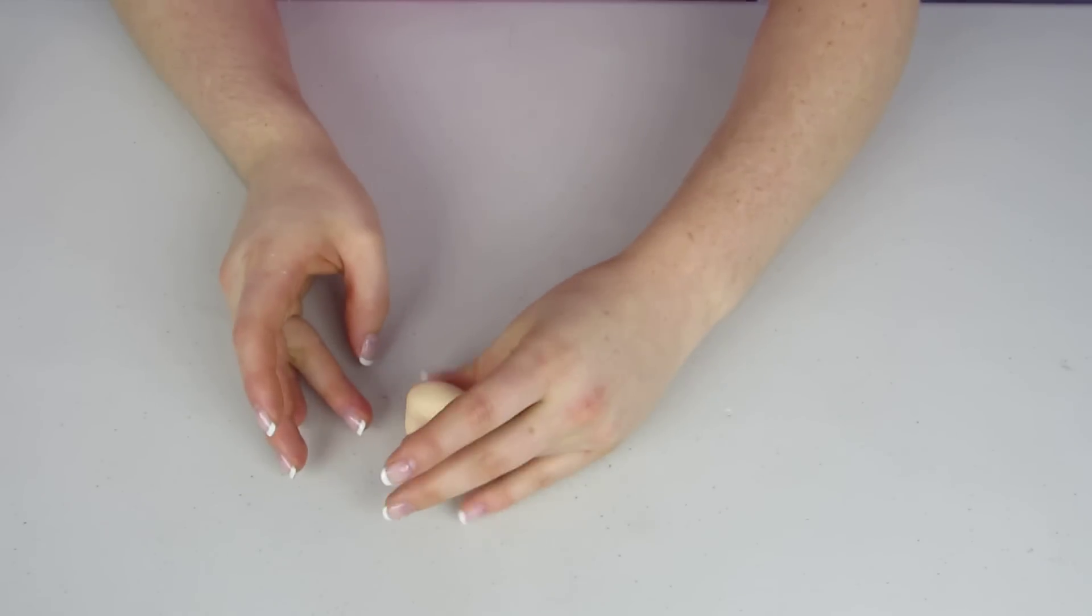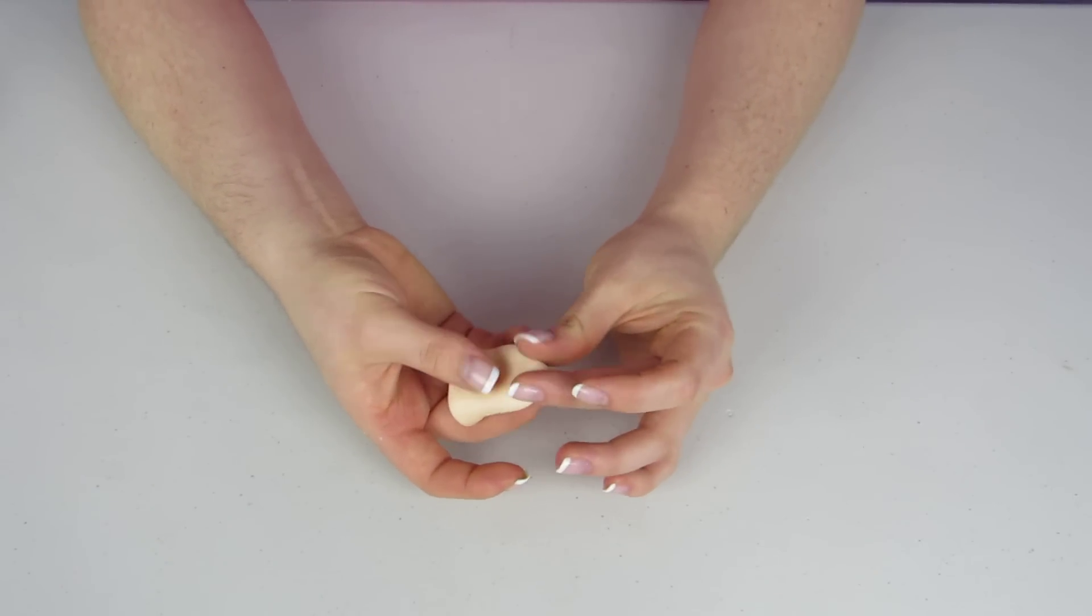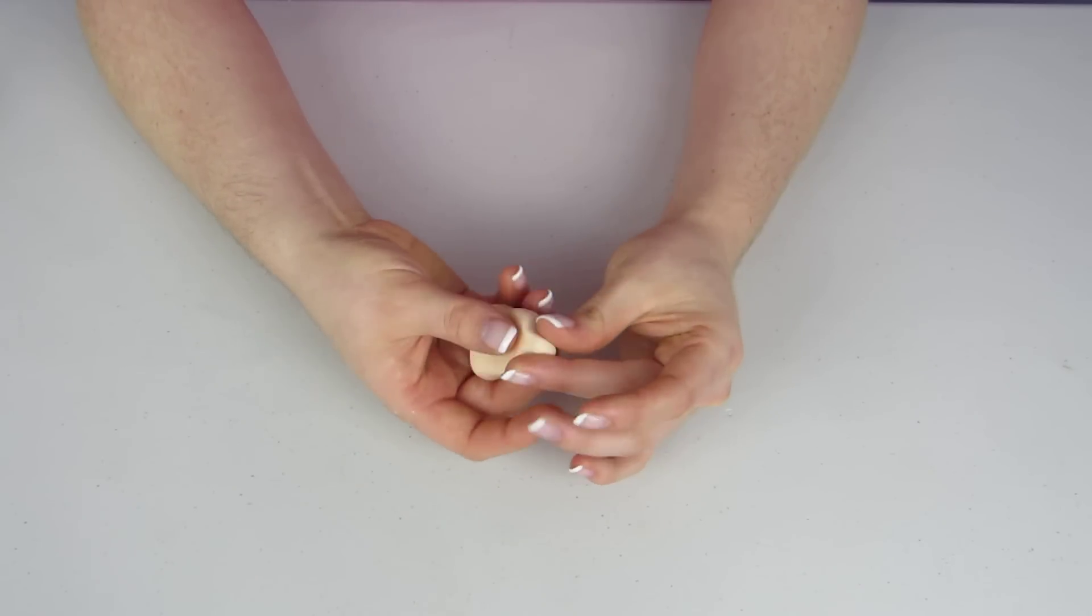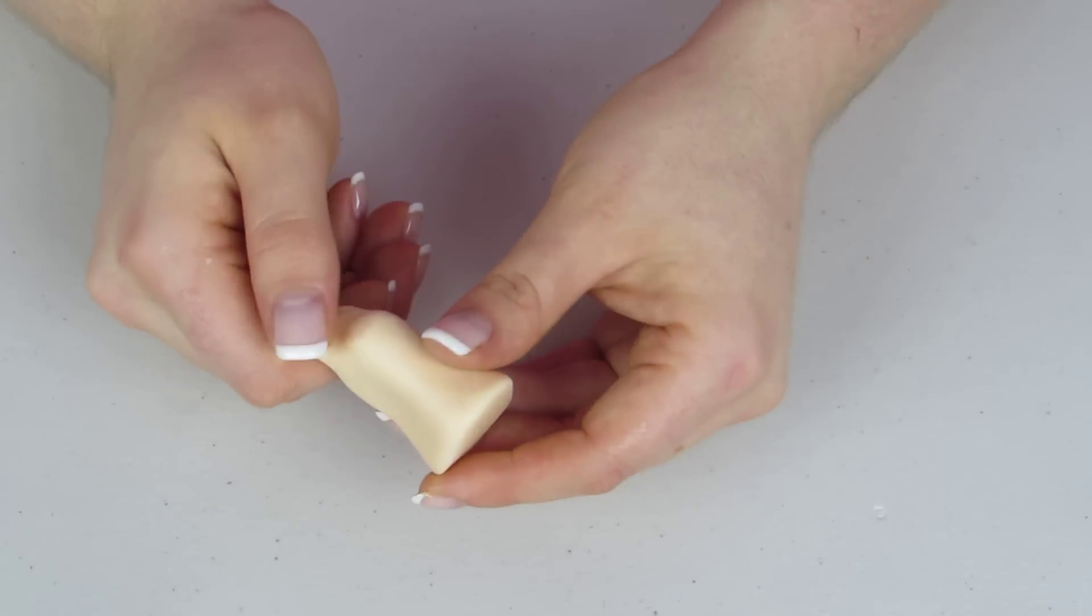And I'm just gonna make his body first. So we're gonna start out with this kind of shape making sure it has a nice flat bottom and then shaping upwards so it has a little bit of a neck. Just like that.